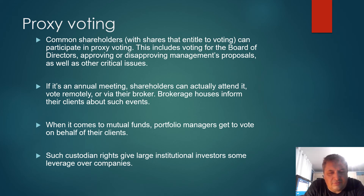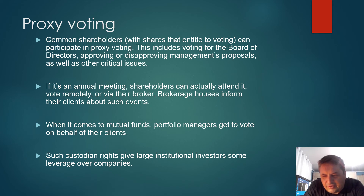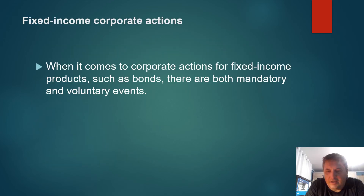Such custodian rights give large institutional investors some leverage over companies. For example, if some mutual fund family owns a million shares of ABC company — representing 10% or 20% of shares outstanding or the float — they have a lot of influence when it comes to voting. They can choose directors, so they have significant leverage over companies.